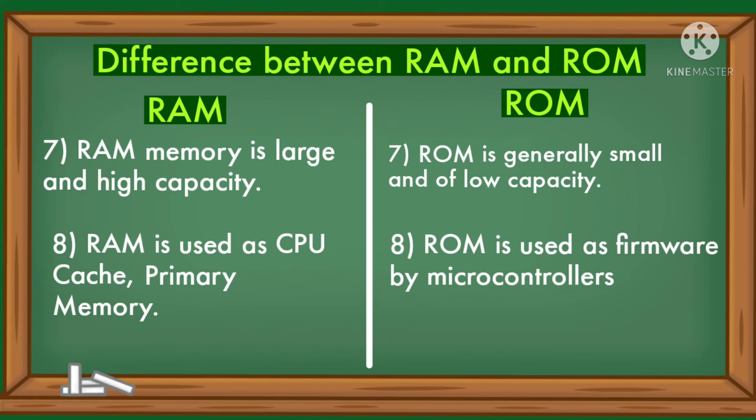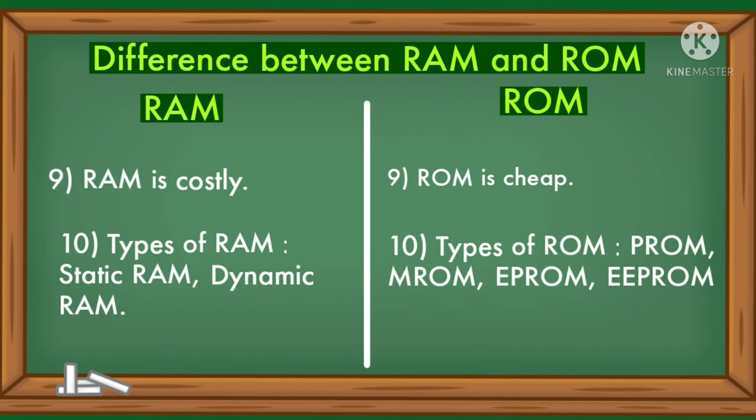RAM memory is large and of high capacity. ROM is generally small and of low capacity. RAM is used as CPU cache and primary memory. ROM is used as firmware by microcontrollers. RAM is costly; ROM is cheap.